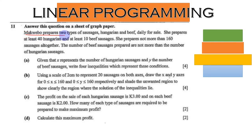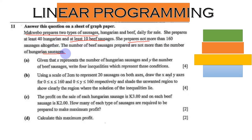Let us quickly dive into our tutorial. The question reads: Makweo prepares two types of sausages — Hungarian and beef — daily for sale. She prepares at least 40 Hungarian and at least 10 beef sausages. She prepares not more than 60, or not more than 160 sausages altogether. The number of beef sausages prepared are not more than the number of Hungarian sausages.